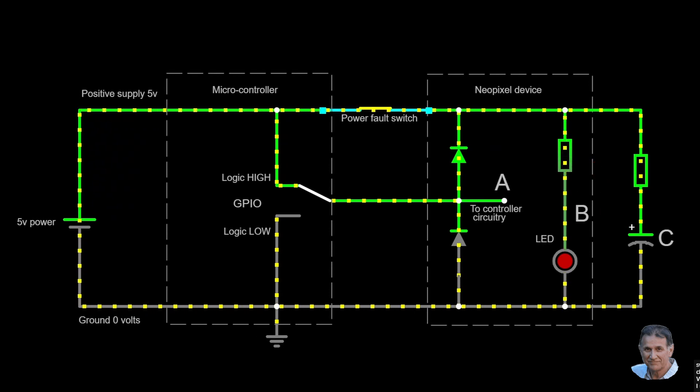To prevent damage to the NeoPixel, there are two built-in protection diodes. Now let's look at the fault condition, where the 5V supply wire disconnects. As the incoming data signal is a logic high, the top protection diode conducts and supplies the NeoPixel with power. So it looks like there's nothing wrong at this point.